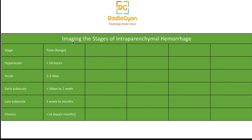Initially with hemorrhage, hemoglobin in the RBCs is in the form of oxyhemoglobin. It then desaturates to become deoxyhemoglobin. In the early subacute stage, deoxyhemoglobin is converted to methemoglobin, which becomes extracellular in the late subacute stage when RBCs are lysed. In the chronic stage, there is hemosiderin. The MRI appearance of blood depends on the form of hemoglobin present and whether it is intracellular or extracellular.